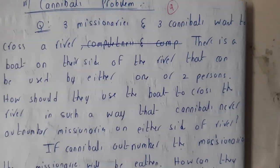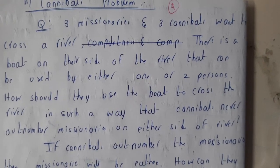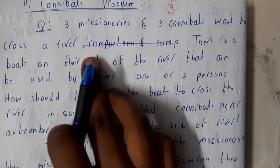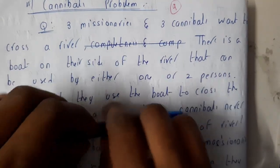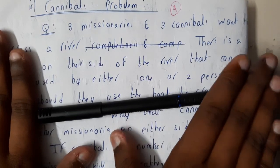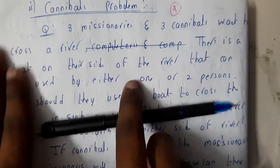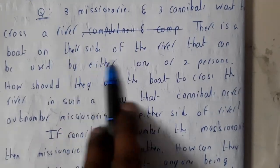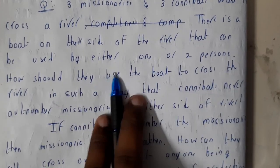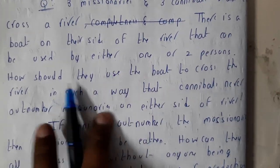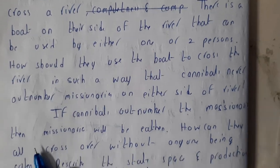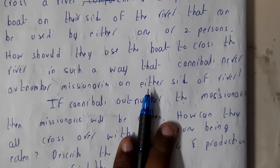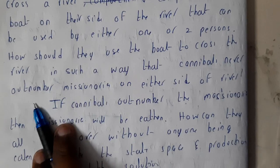The question is really lengthy, so let us go through it faster. Three missionaries and three cannibals want to cross a river. There is a boat, and we need to travel the missionaries and cannibals from one side to the other side. On board, only one or two persons can sit. So how should they use the boat to cross the river in such a way that the cannibals never outnumber the missionaries?